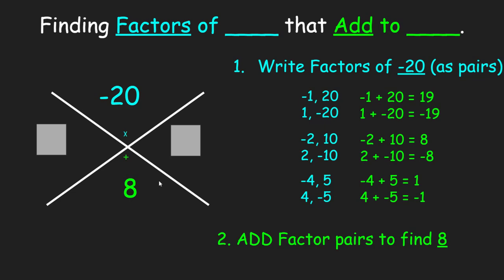Now again, we're looking for factors that add up to positive 8. Positive 8 is going to be given by negative 2 and 10. So I write those factors in the empty boxes. And again, you could put it as 10 and negative 2 or negative 2 and 10. The order does not matter.